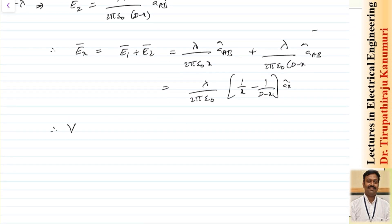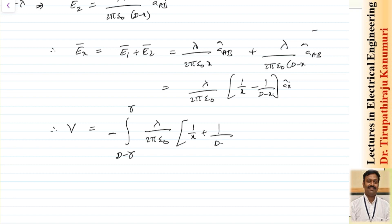To find the potential between the two points, we integrate the electric field intensity. Inside a conductor the electric field is zero, so the limits run only from the surface of one conductor to the surface of the second conductor. Therefore the limits go from (d − r) to r, and we get: V = (lambda / 2π ε₀) × (−1) × integral of [1/x + 1/(d − x)] dx.